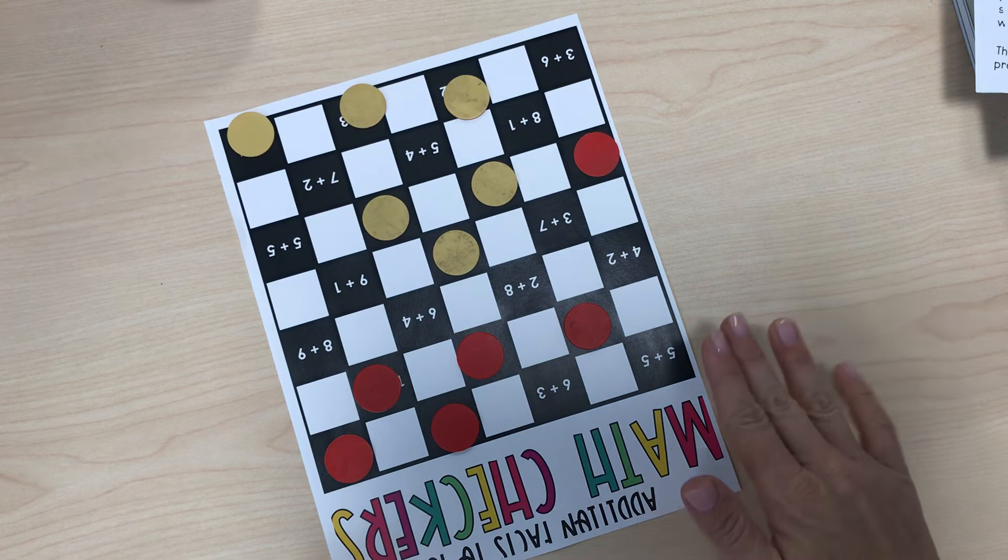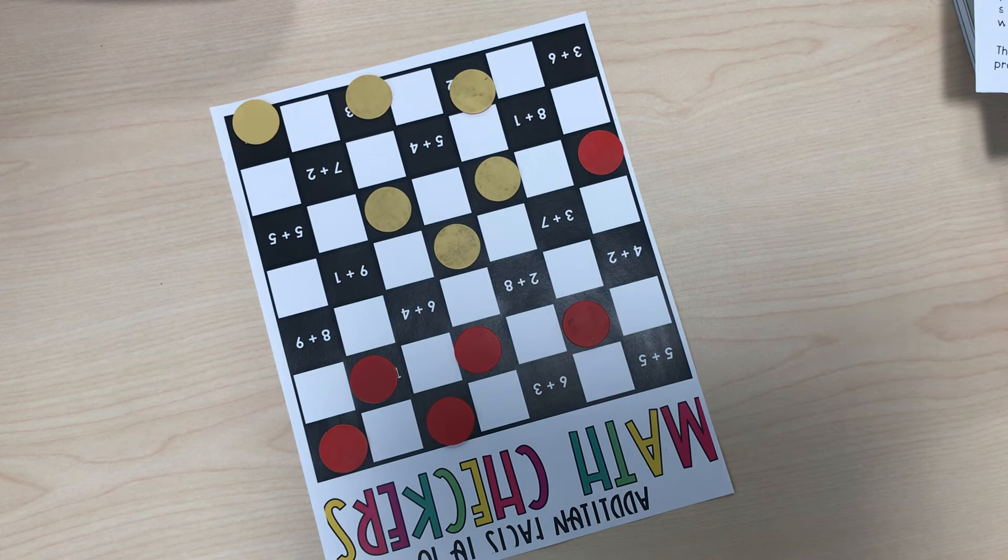So we basically keep going until we've captured each other, so they can go back and forth, until you've solved all 8 of the other opponent's tokens. And this is how you play Math Checkers Addition Facts to 10.